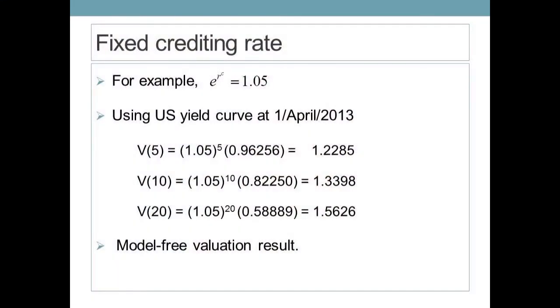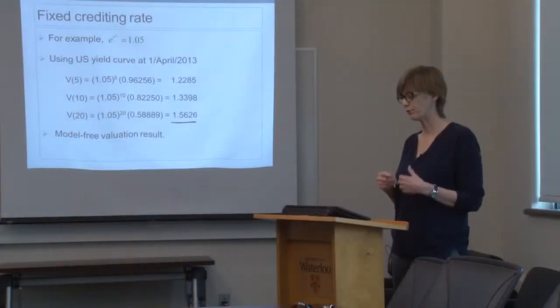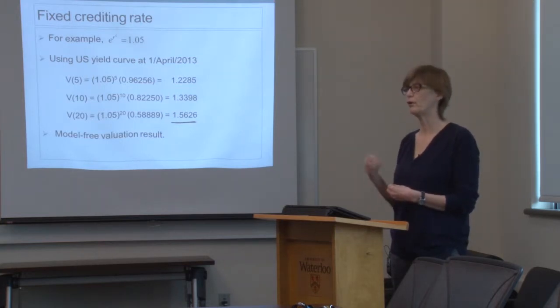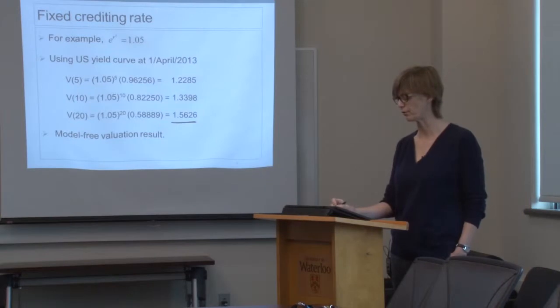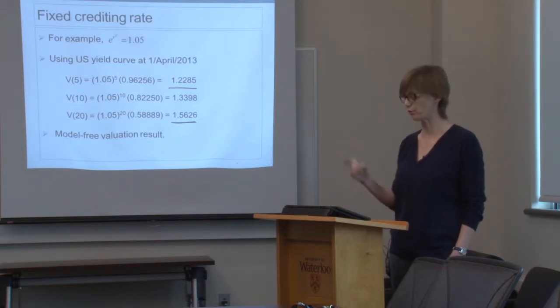For example, with a 5% fixed crediting rate (so e^{R^C} = 1.05) and using the U.S. yield curve at April 1, 2013, with a 20-year horizon, the valuation factor is 1.56. This means for every $1 in the participant's notional fund, the market value is $1.56, and for every $1 contributed, the market value is $1.56. With a 5-year horizon the market value is $1.22, a premium of 22.85% over the notional participant fund. No model assumptions were required to get this result.